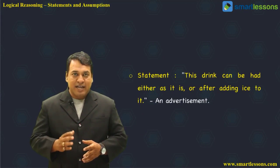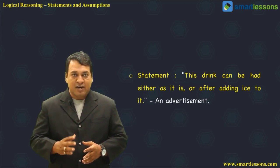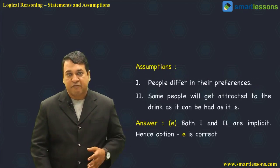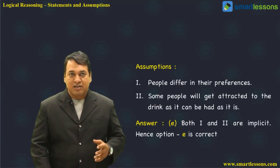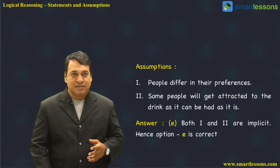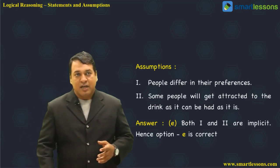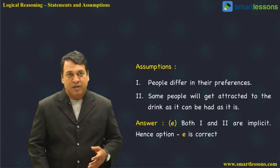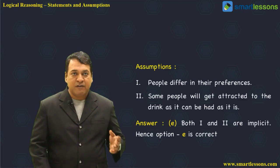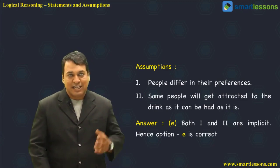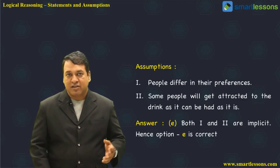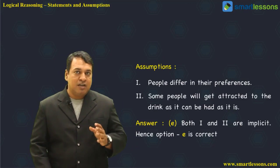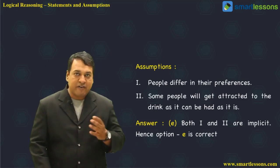The next example is an advertisement: 'This drink can be had either as it is or after adding ice to it.' The assumptions are: one — people differ in their preferences; two — some people will get attracted to the drink as it can be had as it is. Both assumptions have reasonable logic in them.